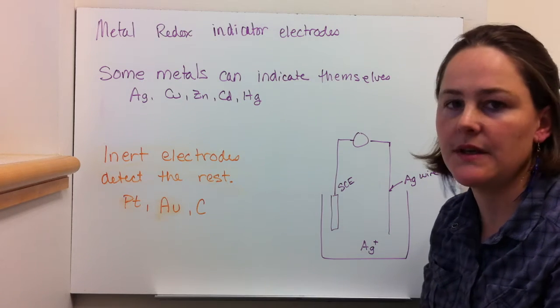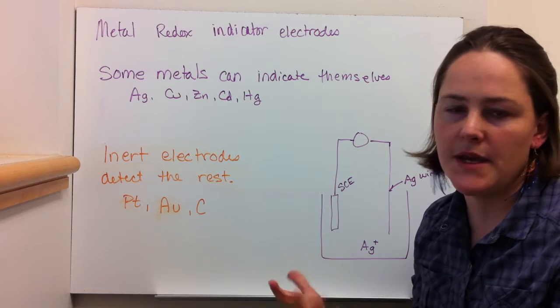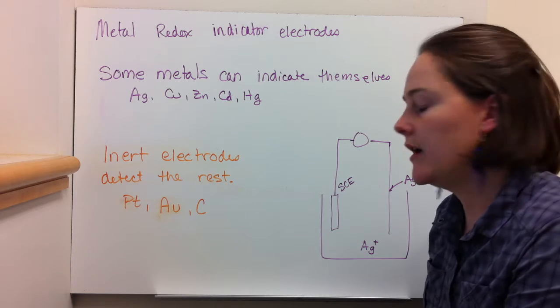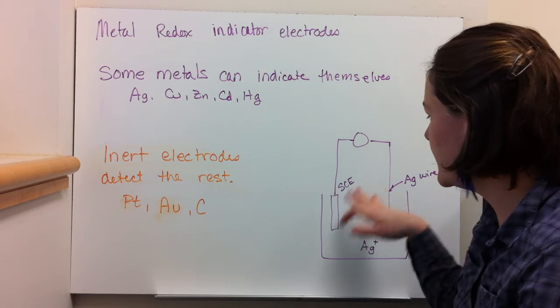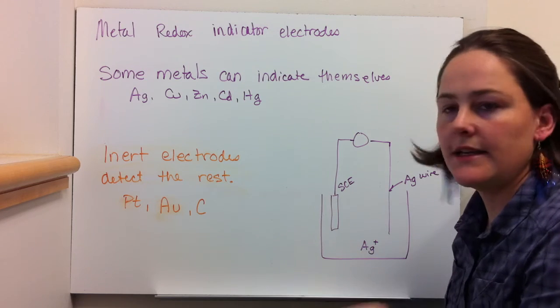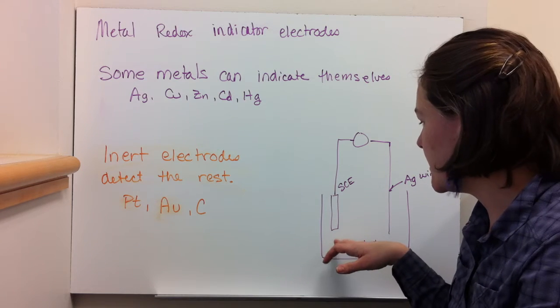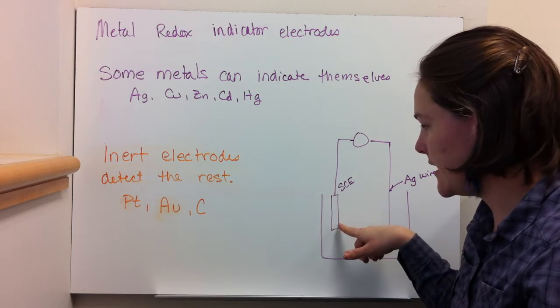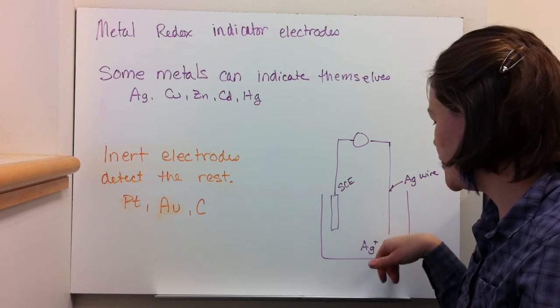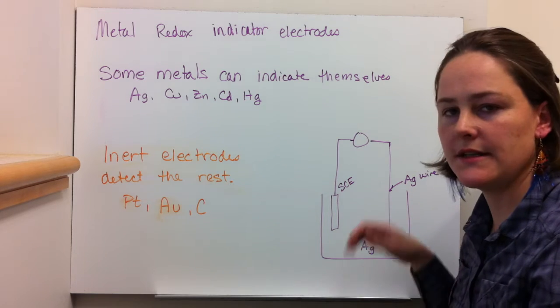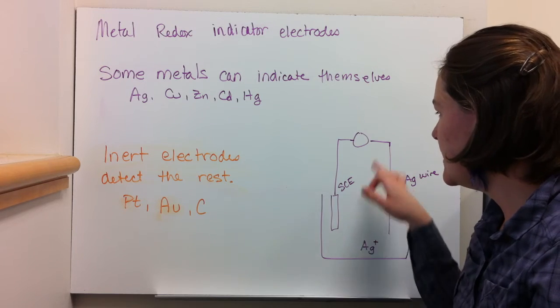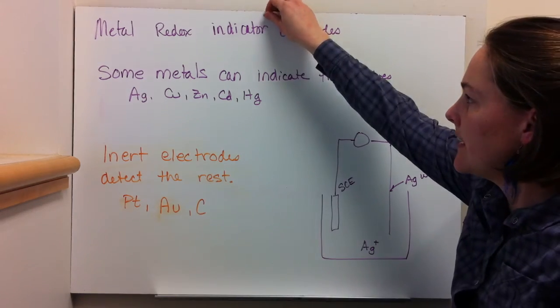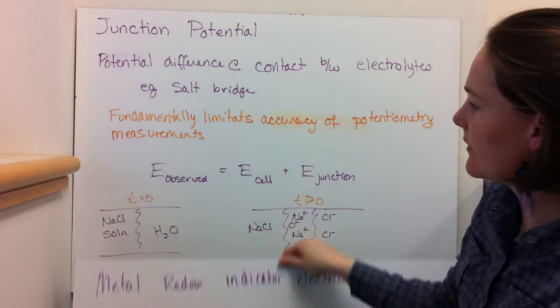It's an inert electrode that only contributes by being a conduit, like being somewhere where electrons can get dumped off or be collected by these metal cations that you're trying to detect. Here is the SCE, the standard calomel electrode. Just like we talked about on the last slide, only it's just a little box here. That's your reference electrode. You have an Ag wire in contact with this Ag+ solution. And you can measure a potential and actually quantify the amount of silver in solution that way.